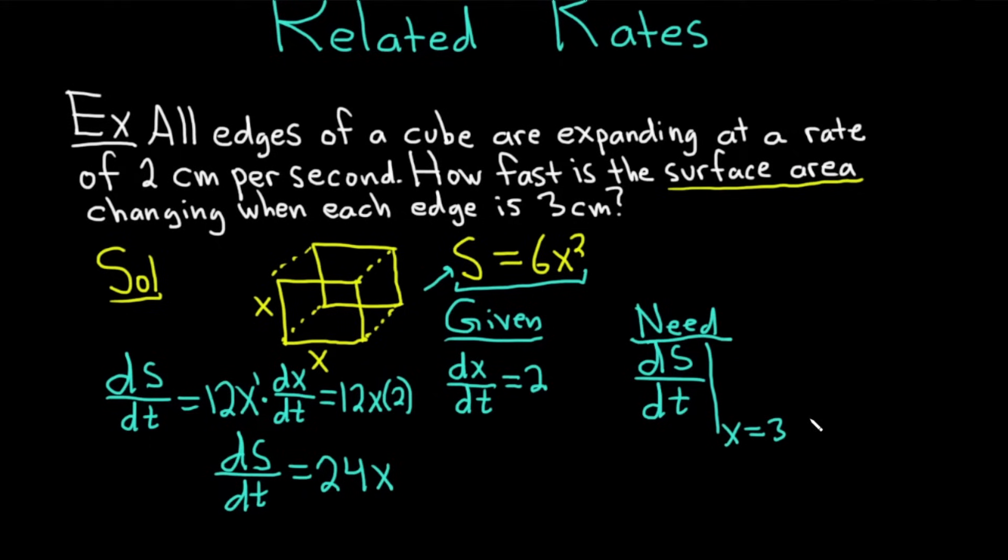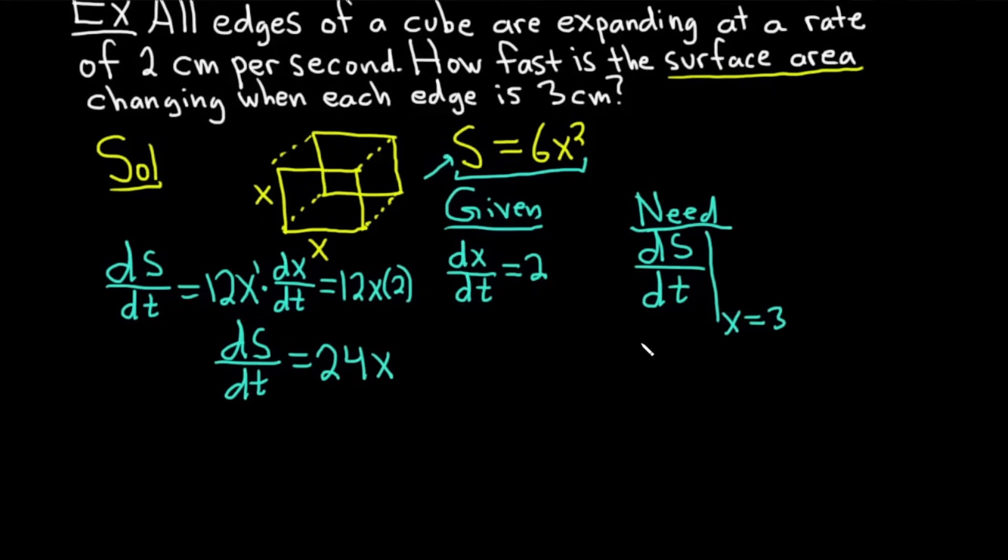We're almost done. Now we need to plug in 3, because we want dS/dt at the moment in time when x is equal to 3. So to finish up, we write dS/dt. And we draw the line, x equals 3. It's really important to have correct notation. This is equal to, so basically this means we're plugging in 3 into our formula for dS/dt, which is equal to 24x. This is 24 times 3. And this is equal to 72.